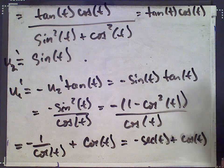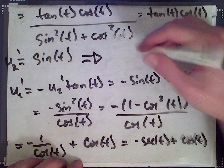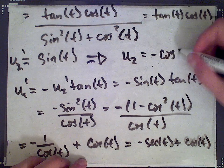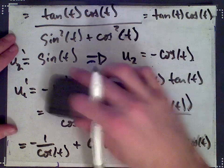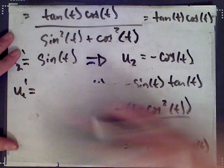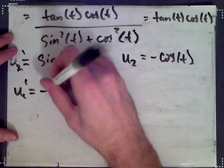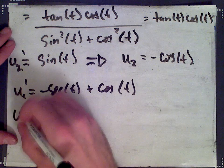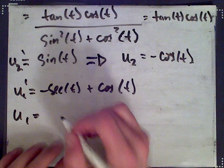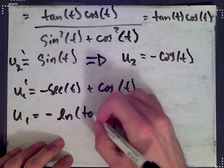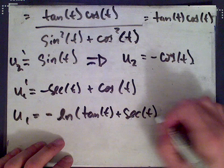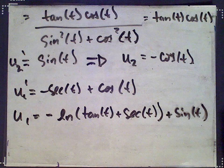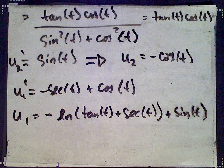We integrate each to find u2 and u1. Integrating u2 prime equals sine t gives u2 equals negative cos t. For u1 prime equals negative secant t plus cos t: the integral of secant is ln of tan t plus secant t, so we get u1 equals negative ln of tan t plus secant t plus sine t.